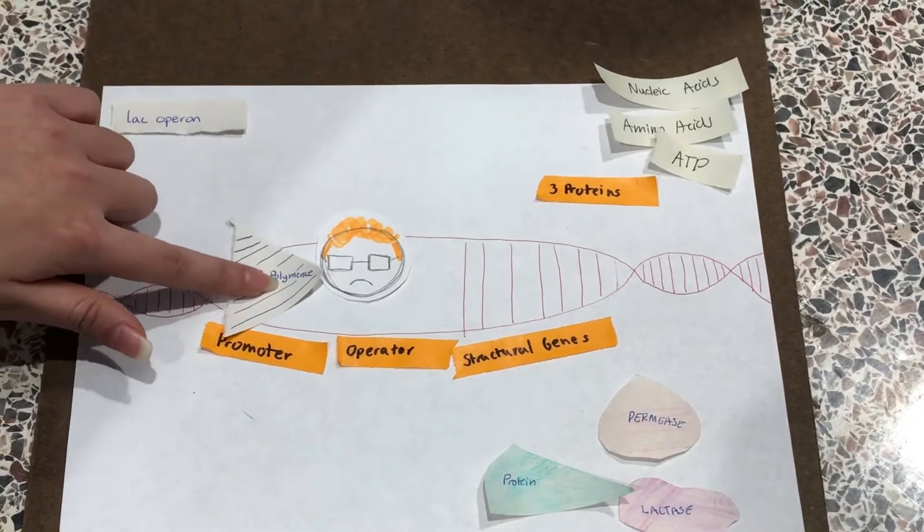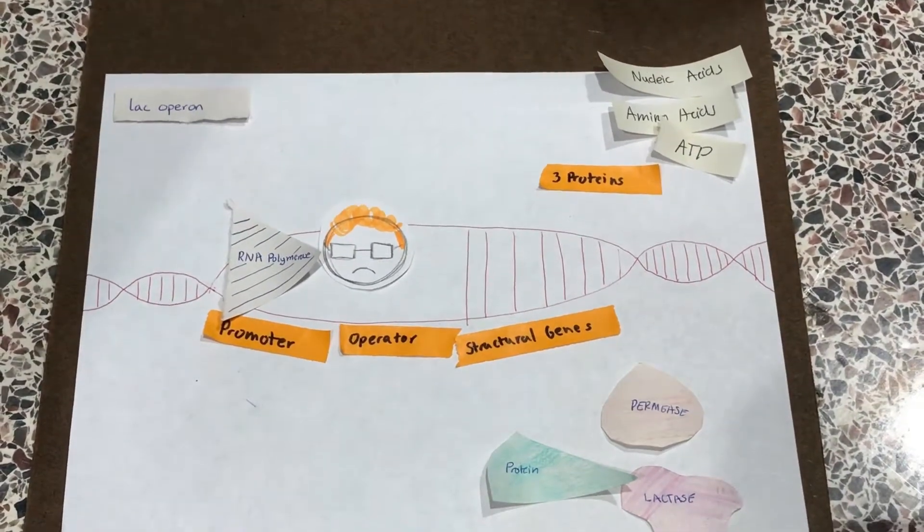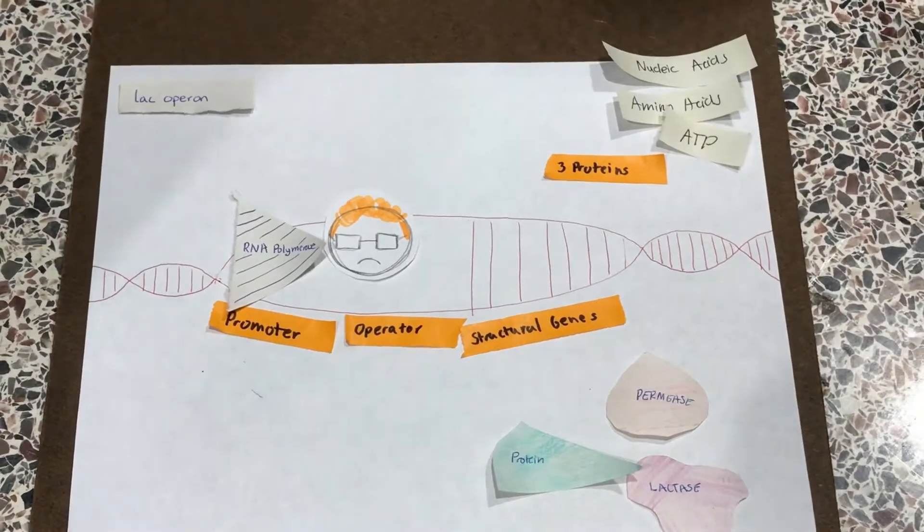Basically, the RNA polymerase can't move when the blocker or active repressor is active and bound to the operator.